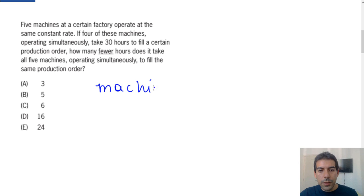This question deals with machines and the amount of hours that machines do a certain job. We know that four machines do the job in 30 hours, and we have to find out the amount of hours that five machines do the same job at the same constant rate.